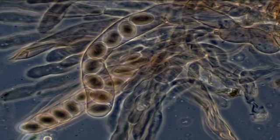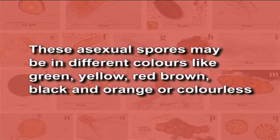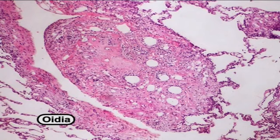Now we will know about fungal spores. Fungi produce spores by both sexual and asexual processes. The spores produced by different fungi differ in their shape, colour, and size, and hence are used for identification and classification of fungi. These spores are formed by hyphae involved in reproduction. In asexual reproduction, fungi produce different types of spores in great abundance. These are capable of dormancy and help in disseminating the species over long distances. These asexual spores may be in different colours like green, yellow, red, brown, black, and orange, or colourless. If hyphae break into individual cells forming spores, these are known as oidia, and are produced externally as shown in the figure.